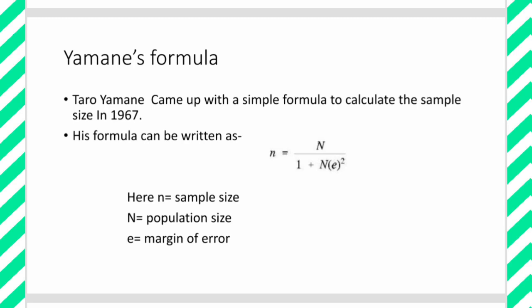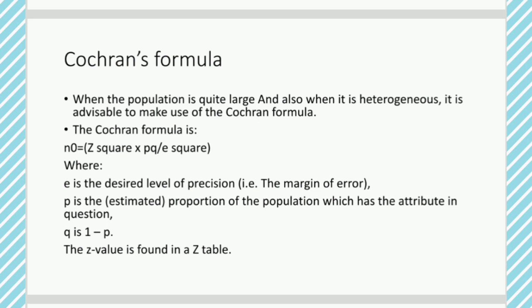Cochran's formula is used when the population is quite large and the units of the population are heterogeneous. In such a situation, it is advisable to use the Cochran formula. It is defined as: n-naught equals z-squared multiplied by pq, divided by e-squared. Here, e is the margin of error or desired level of precision, p is the proportion of the population with the attribute in question, q is 1 minus p, and z is found in the z-table.